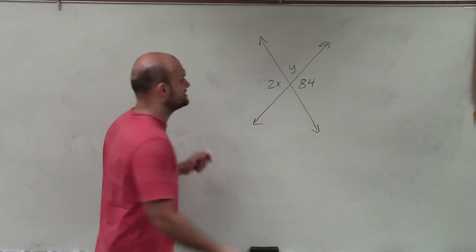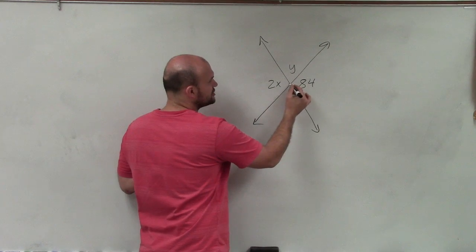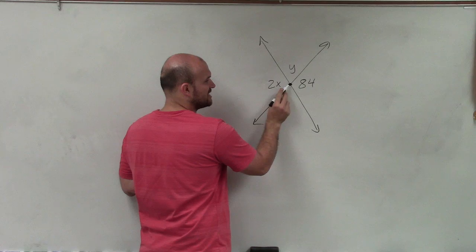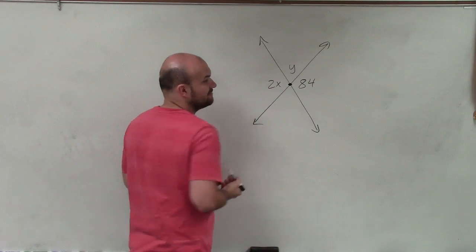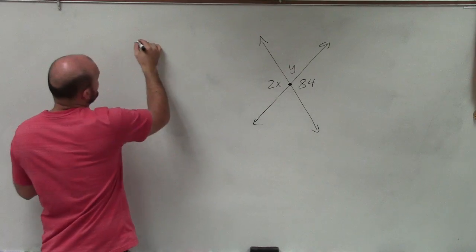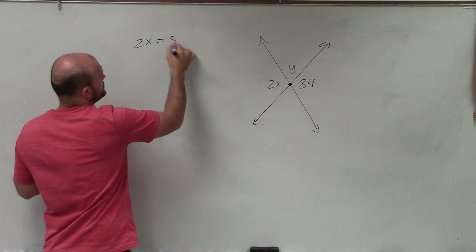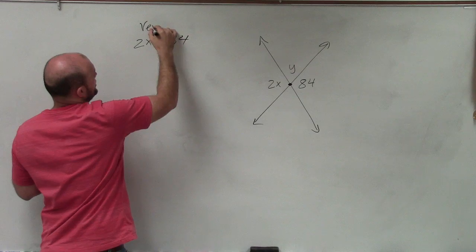So automatically, I can see that vertical angles are two angles that share the same vertex but do not share any common sides. Therefore, I can say 2x and 84 are vertical. And vertical angles, the angle relationship is vertical angles are equal to each other.